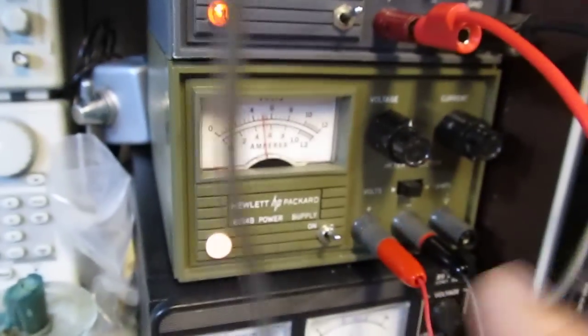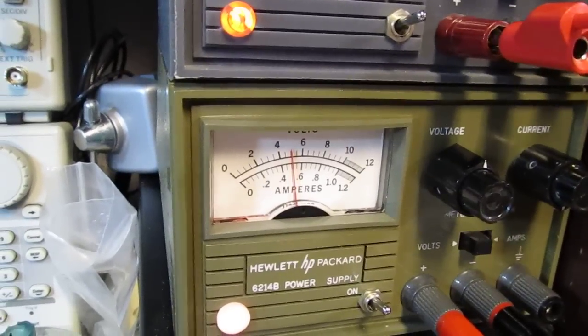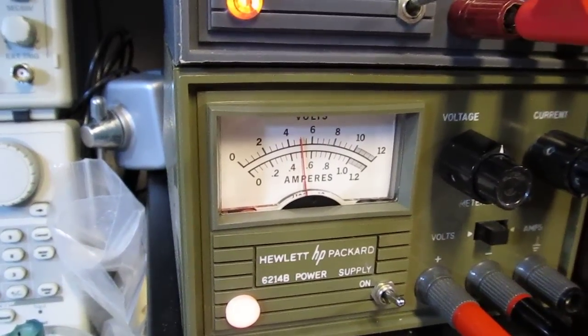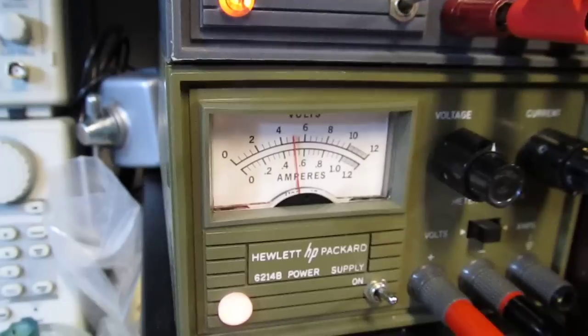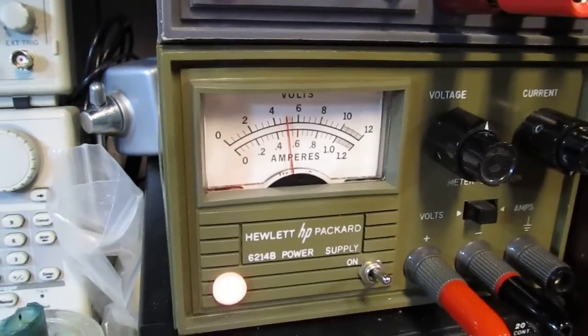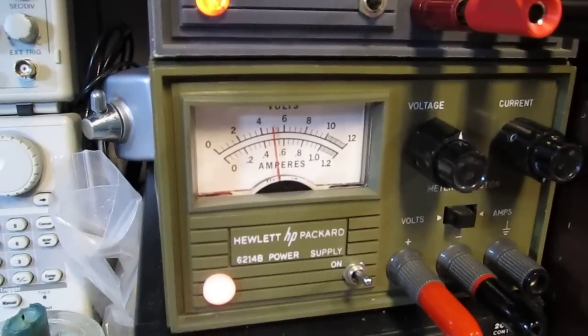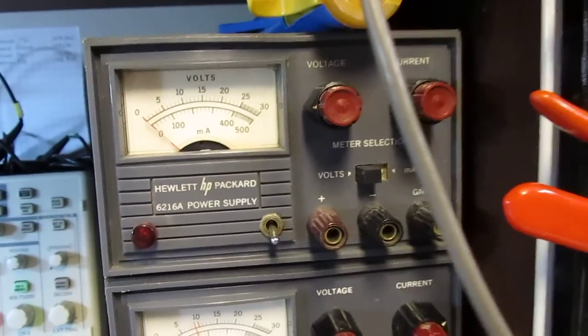I prefer the analog metering on the supplies because I'm a firm believer if you want to set a power supply accurately, you're going to measure it with a DMM at your board. So I just use the meters here to kind of set it manually. I like these little power supplies.